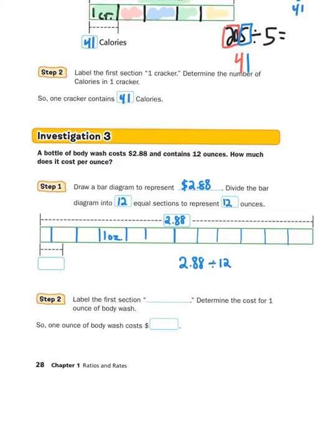Now, if you have a calculator, you could type that in. So, $2.88 divided by 12, and I get 0.24. One ounce of body wash costs 0.24, or 24 cents. All right, that's what the bar diagram is all about.